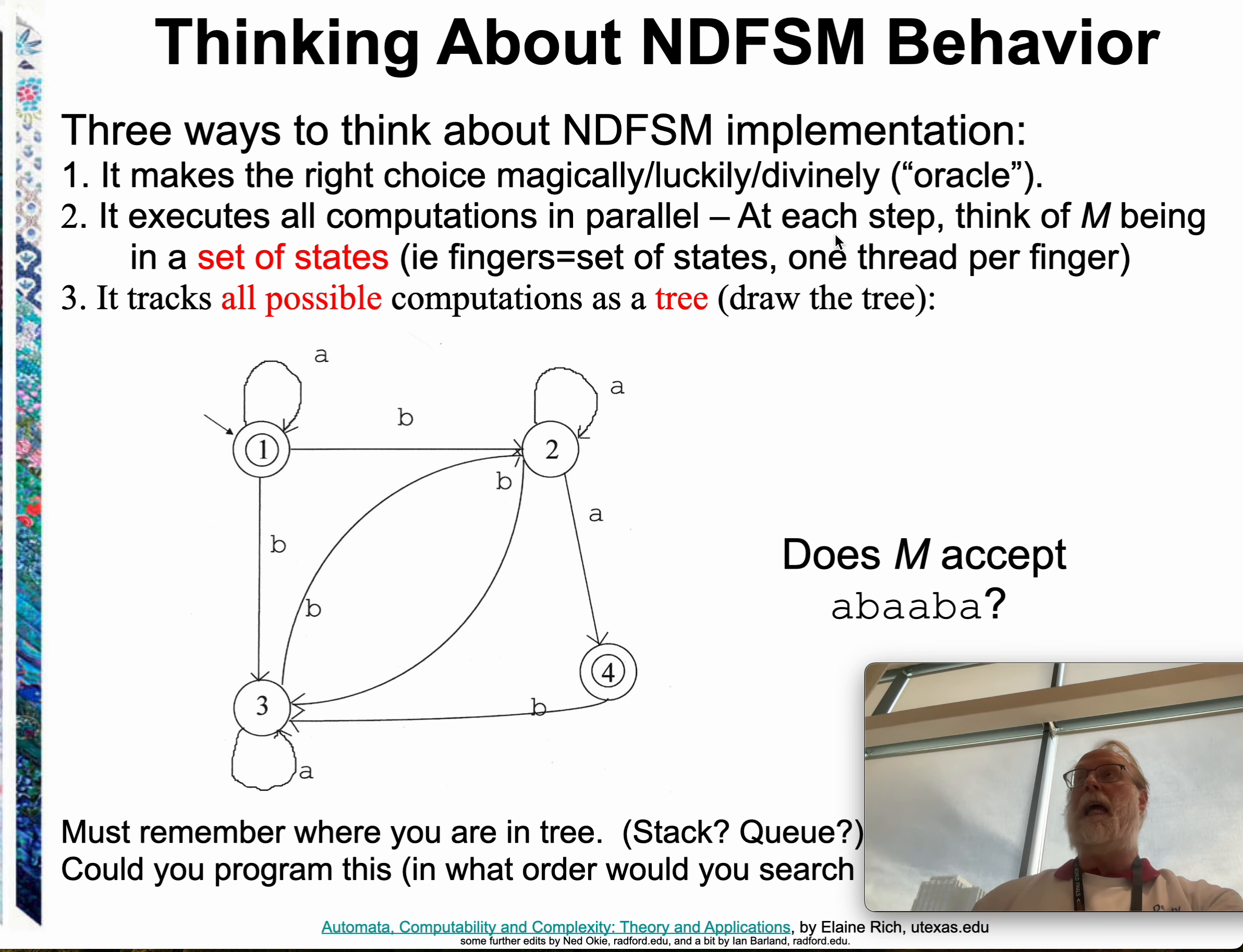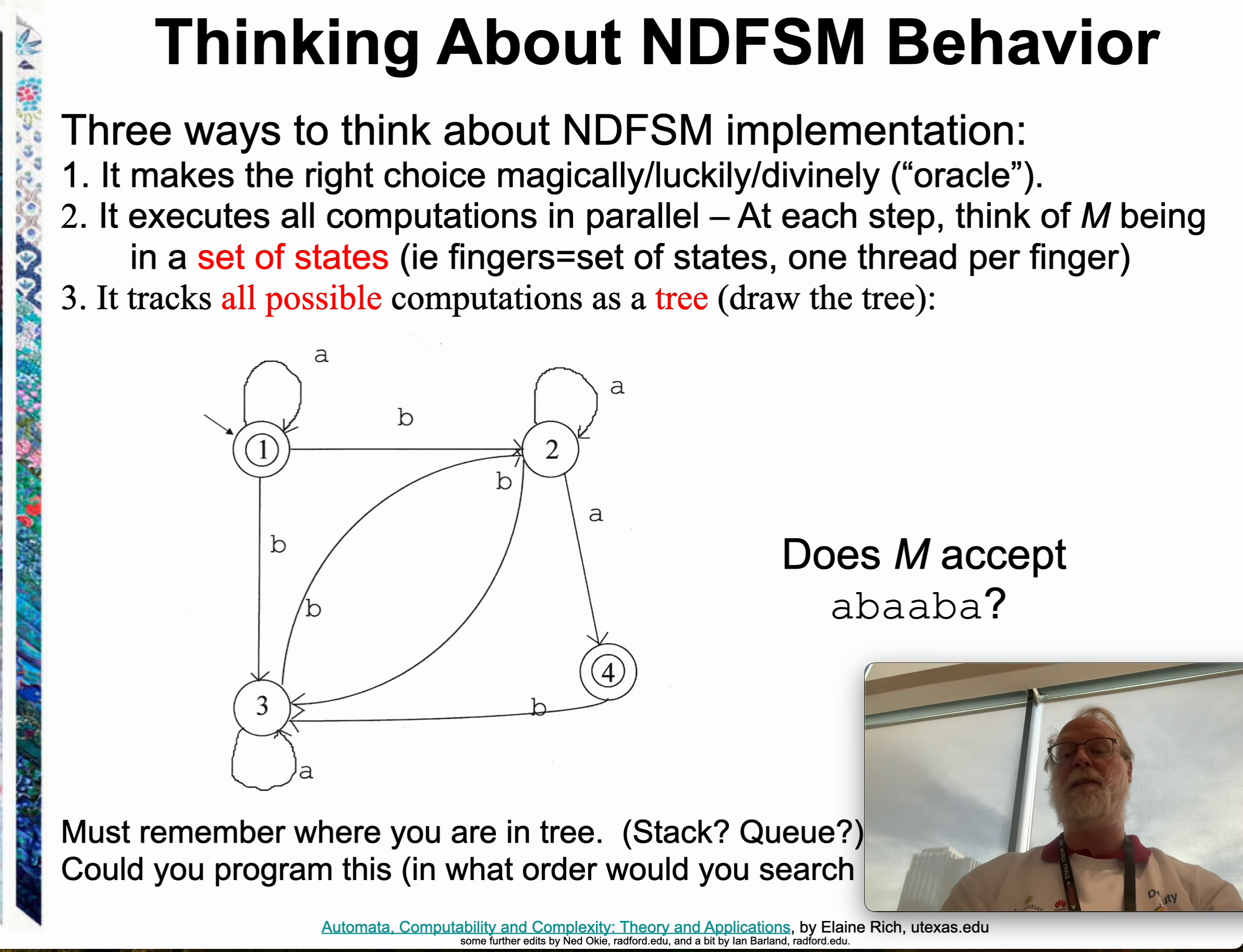I've sort of presented implicitly three different ways of thinking about how a non-deterministic machine proceeds. You either say you make a guess and if you can guess super lucky you can get there. This is also sometimes called an oracle. If you could consult an oracle whenever there is a choice and the oracle will give you a good answer, then that might say something. So that's you guess in a lucky way.